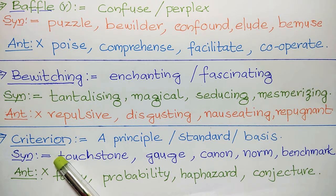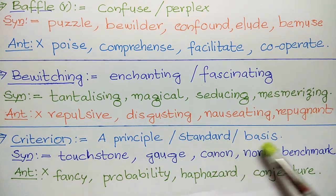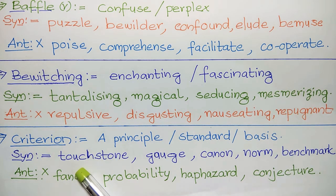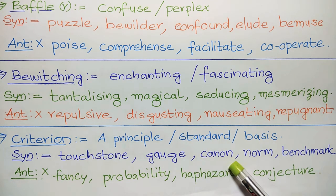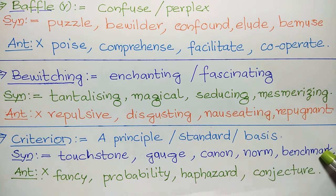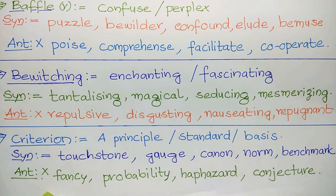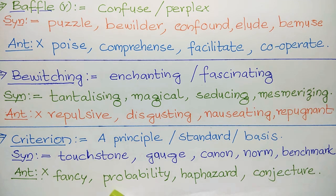Next is criterion. Criterion means a principle or standard or basis. Synonyms are touchstone, gauge, canon, norm, benchmark. Antonyms are fancy, probability, haphazard, conjecture.